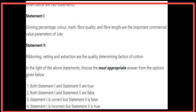Given below are two statements. Statement 1: Ginning percentage, color, trash, fiber quality, and fiber length are the important commercial value parameters of jute — Statement 1 is false. Statement 2: Ribboning, retting, and extraction are the quality determining factors of cotton — Statement 2 is false. The most appropriate answer is that both Statement 1 and Statement 2 are false.